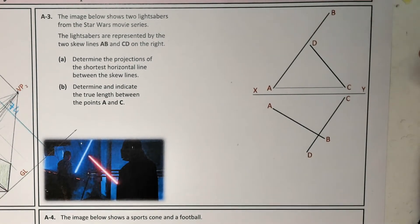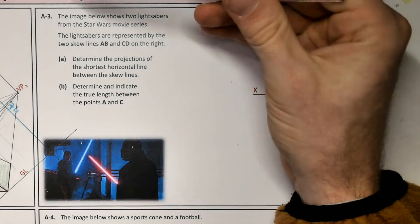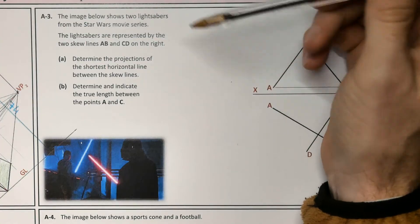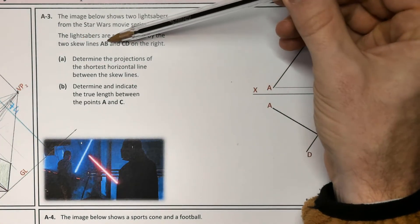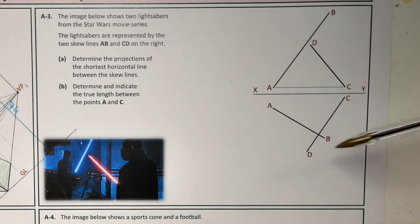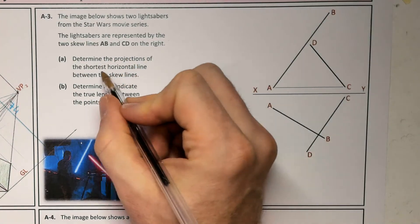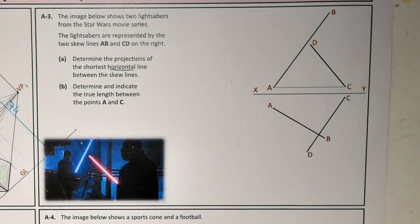Okay, so welcome to 2024 question A3. This is a skew lines question. The image below shows two lightsabers from the Star Wars movie series. The lightsabers are represented by the skew lines AB and CD on the right, so we have AB and CD. First of all, they want us to determine the shortest horizontal distance between the skew lines.